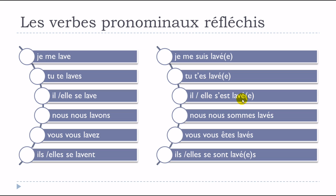Full passé composé conjugation of se laver: je me suis lavé(e), tu t'es lavé(e), il s'est lavé, elle s'est lavée, nous nous sommes lavé(e)s, vous vous êtes lavé(e)s, ils se sont lavés, elles se sont lavées. Remember the final 's' is not pronounced. Note that a feminine option applies throughout, and 'nous' could refer to a group of women.